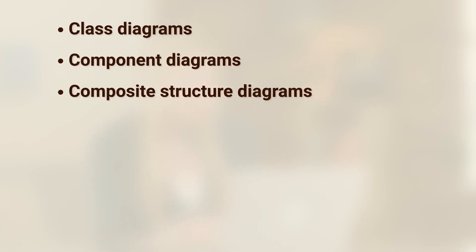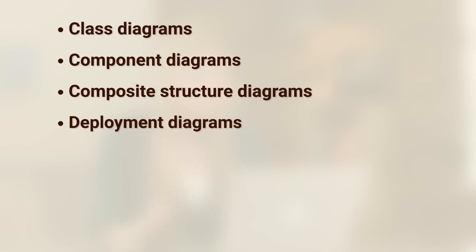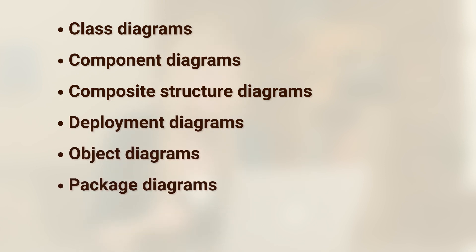The second category of UML diagrams is going to dive more into technical detail. So if you're a developer, you're actually going to hang out more in this list of seven other UML diagrams: class diagrams, component diagrams, composite structure diagrams, deployment diagrams, object diagrams, package diagrams, and profile diagrams.